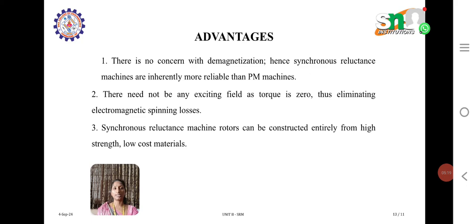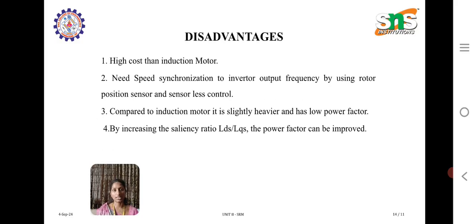Coming to advantages of synchronous reluctance machines: there is no concern with demagnetization; hence, these machines are more reliable than permanent magnet machines. They need not have any exciting field, as excitation torque is zero, thus eliminating electromagnetic spinning losses. Synchronous reluctance machines are constructed entirely with high strength and low cost materials. Coming to disadvantages: this motor has higher cost than the induction motor. By increasing the saliency ratio — that is, the direct axis inductance to quadrature axis inductance ratio — the power factor can be improved. Compared to the induction motor, it is slightly heavier and has a low power factor.